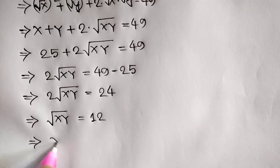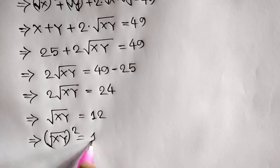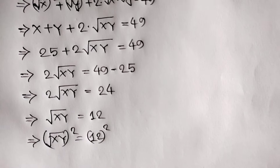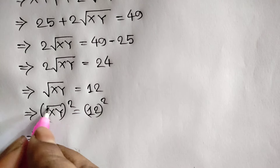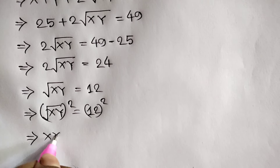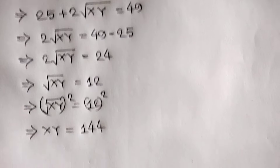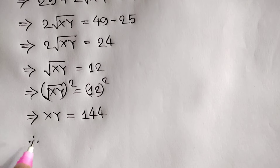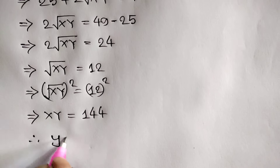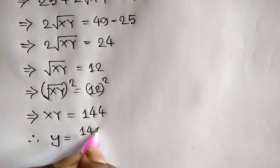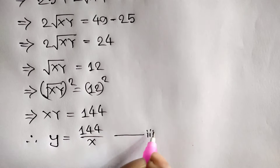Squaring both sides again, (√(xy))² = 12², so the square cancels the square root and we get xy = 144. Therefore y = 144/x, and this is called equation number 3.